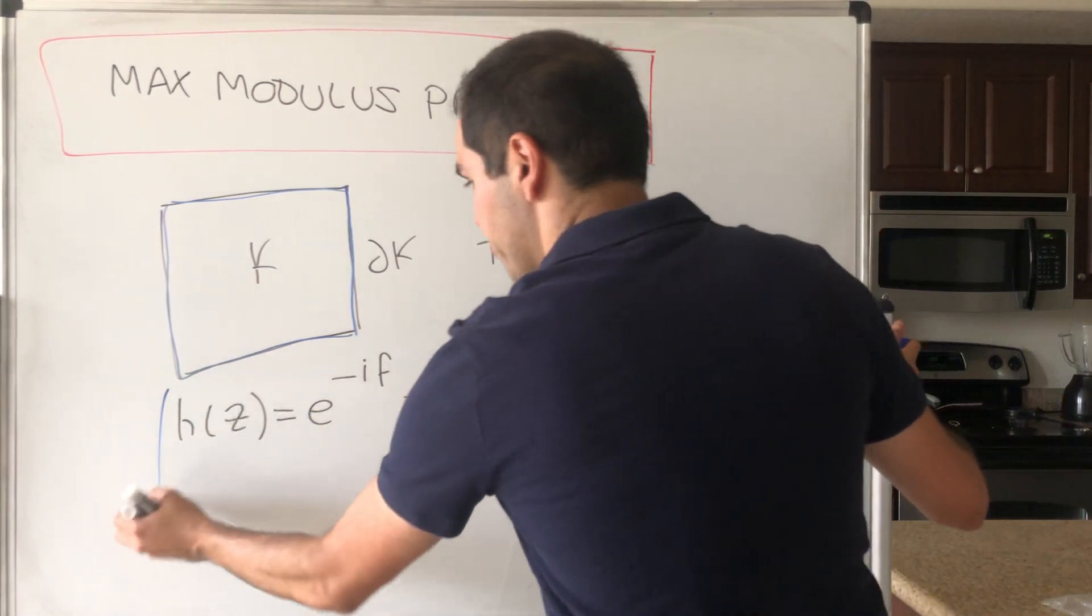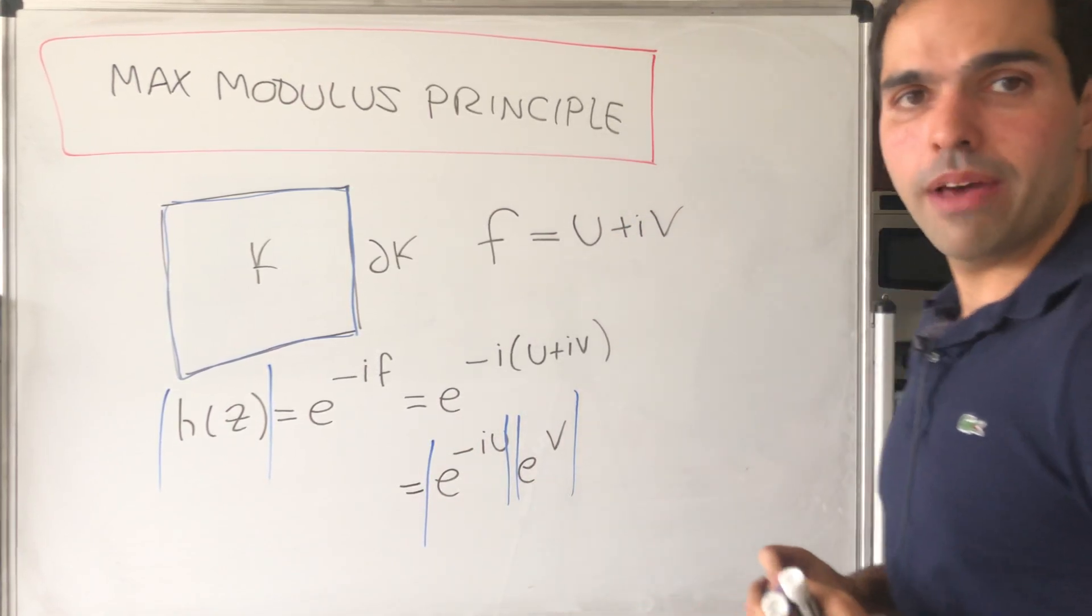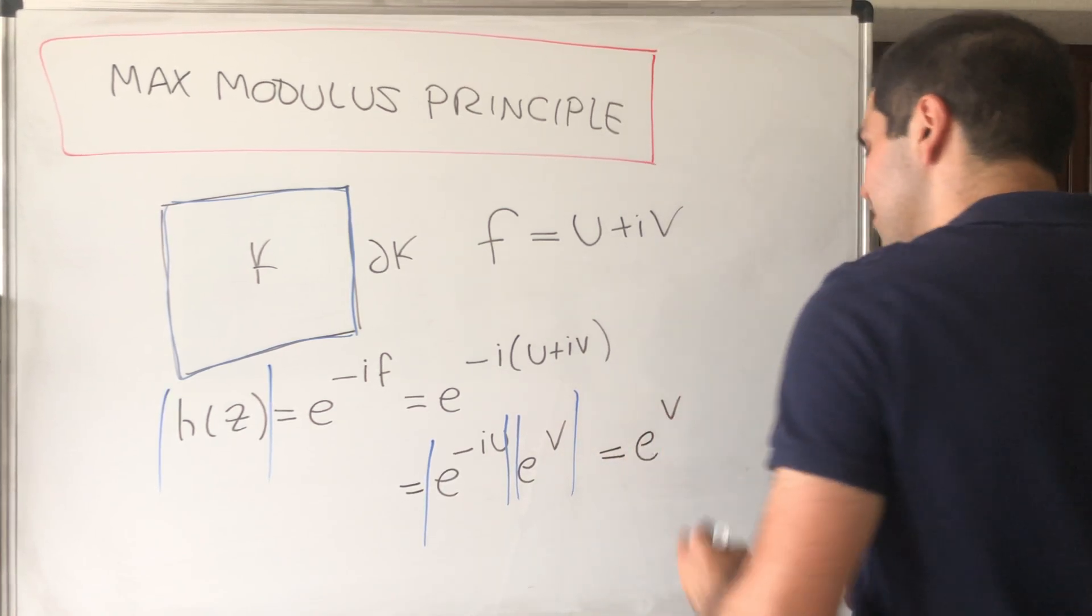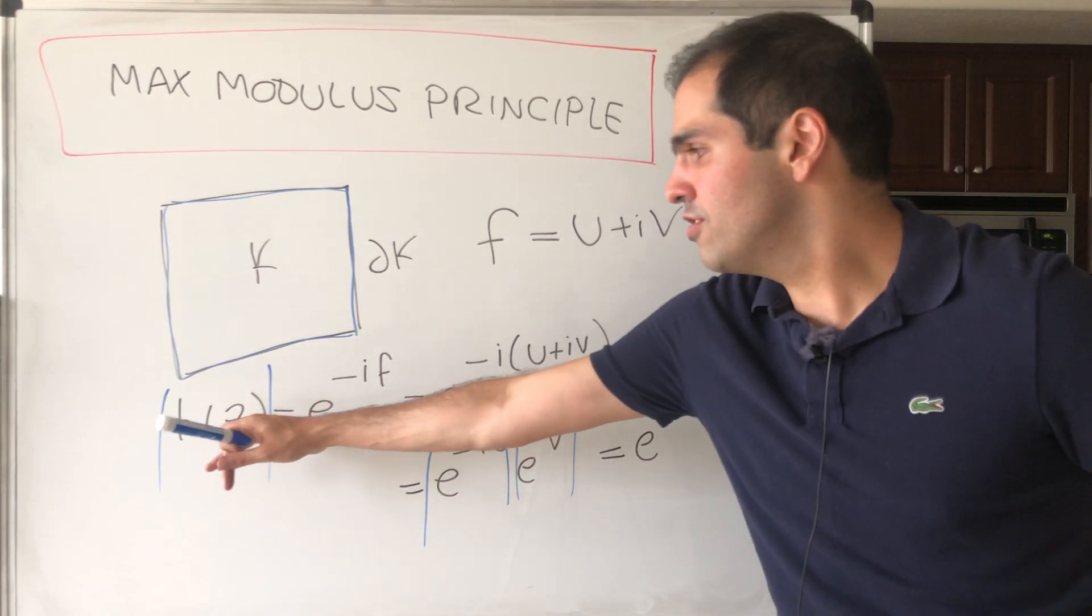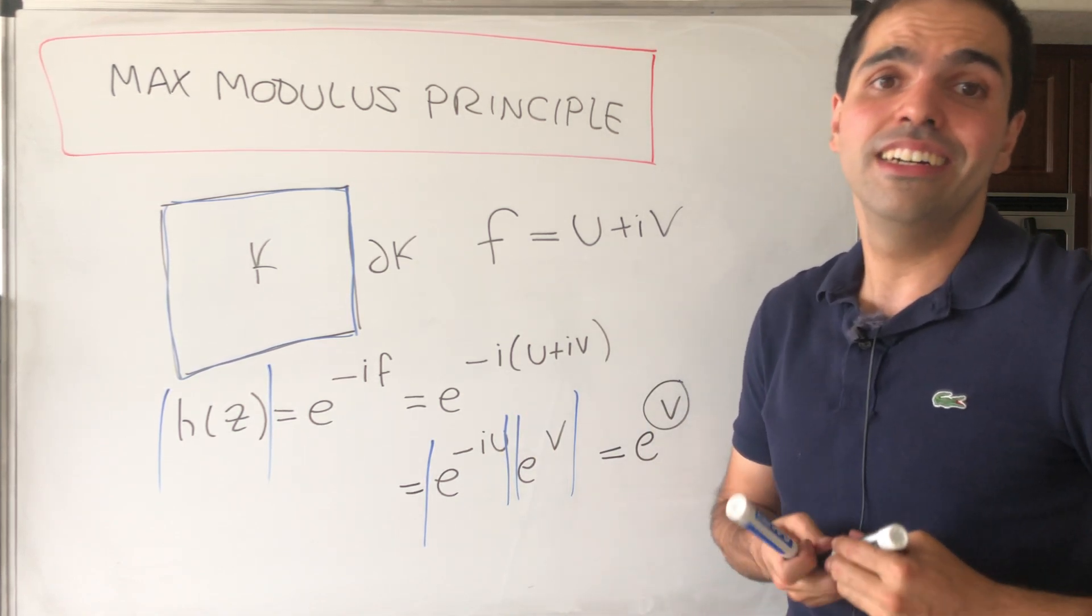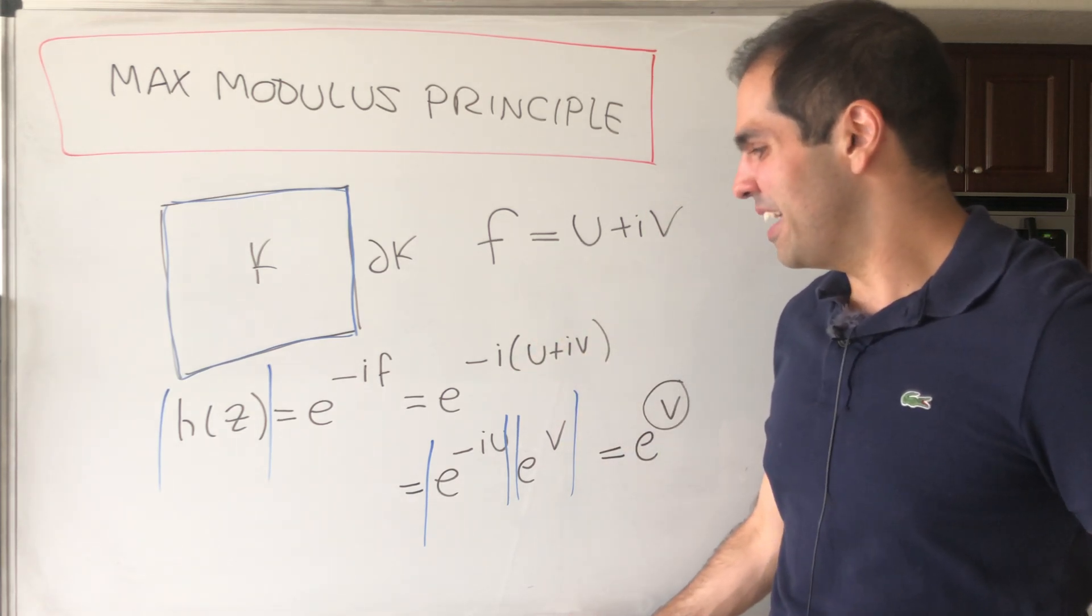Well, this is purely imaginary, so this becomes one, and then we just get e^v. So similarly, the biggest value of h(z) is the biggest value of v, and we also get that the biggest imaginary part is also on the boundary.